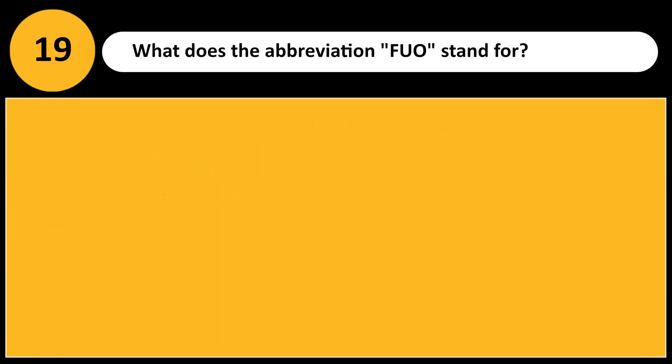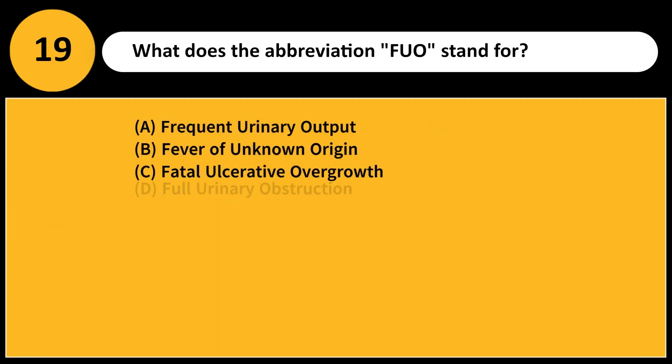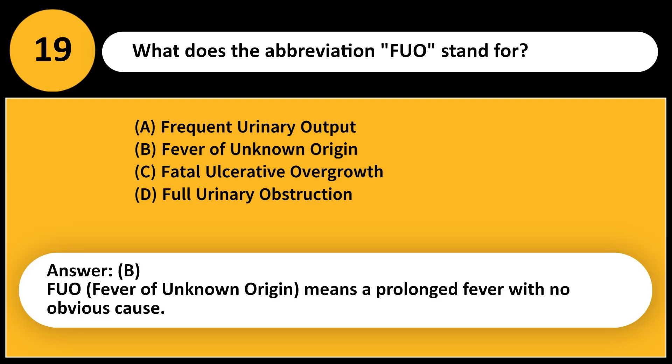What does the abbreviation FUO stand for? A. Frequent urinary output B. Fever of unknown origin C. Fatal ulcerative overgrowth D. Full urinary obstruction. Answer: B. FUO — Fever of unknown origin — means a prolonged fever with no obvious cause.